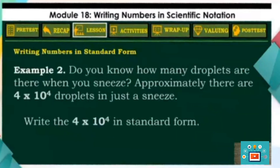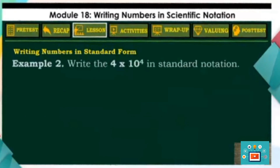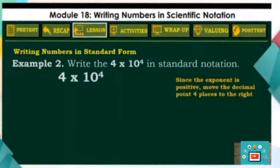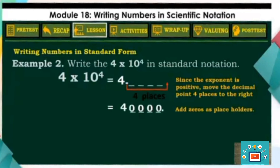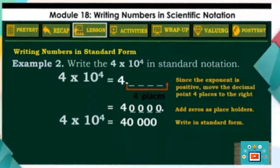Let us take a look at example 2. Do you know how many droplets there are when you sneeze? Approximately, there are 4 times 10 to the 4th power droplets in just a sneeze. Since the given number has a positive exponent, we move the decimal point 4 places to the right. Considering the number 4, the decimal point is located on its rightmost side. Move it 4 places to the right and add zeros as placeholders. Therefore, 4 times 10 to the 4th power is equal to 40,000.